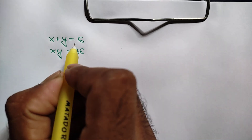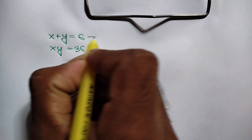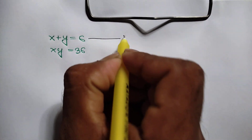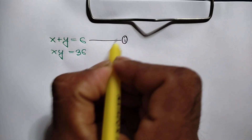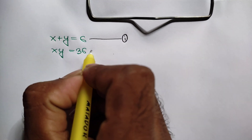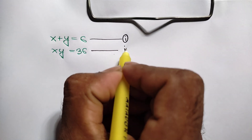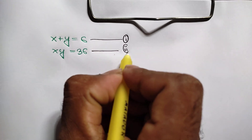Now, x plus y is equal to 6 — this is called equation number 1. And xy is equal to 36 — this is called equation number 2.